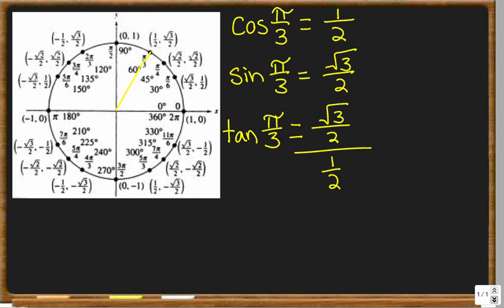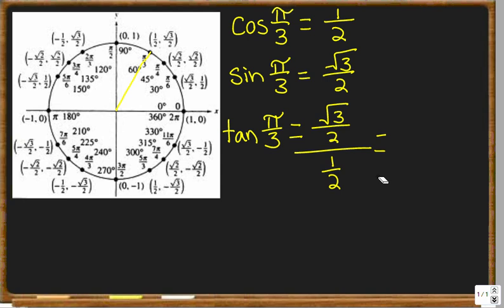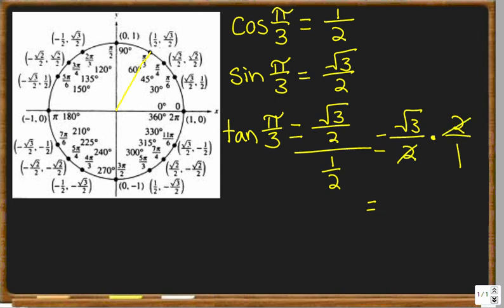The best way to solve a fraction divided by a fraction is to take the denominator, which is 1/2, flip it to 2 over 1, and multiply by the numerator. When you divide by a fraction, it's the same as multiplying by the reciprocal. So we get the square root of 3 over 2 multiplied by 2 over 1. The 2's cancel, and we're left with the square root of 3 over 1, which is just the square root of 3. This is completely simplified and is the exact answer.